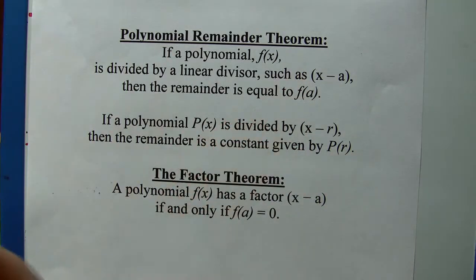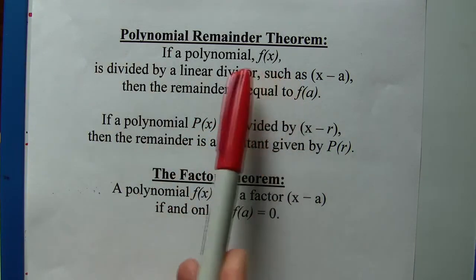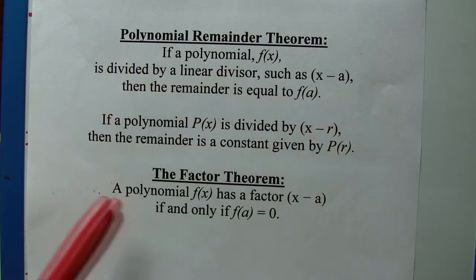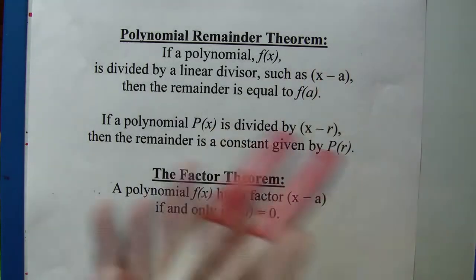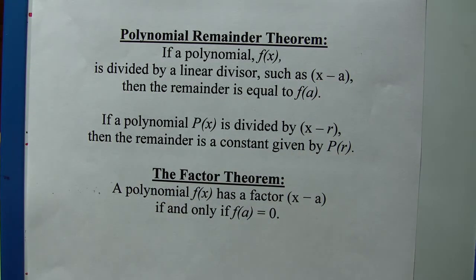Basically, in more vernacular, you have a polynomial, say x³ + x² + 6, and you divide it by something like x - 5, and you get a remainder.